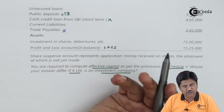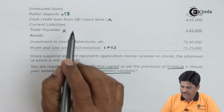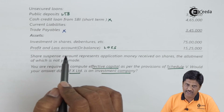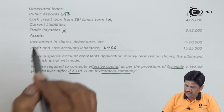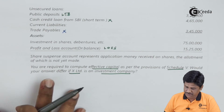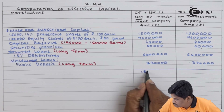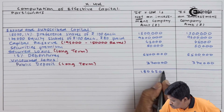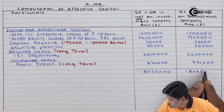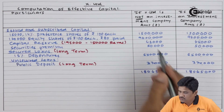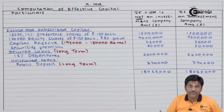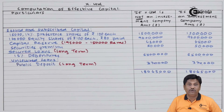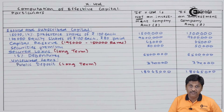Short-term borrowings will not be counted as capital. We take the total of the liability side first. Then from that total we subtract certain asset-side items.